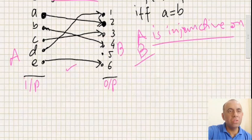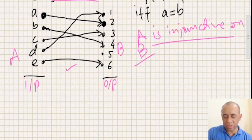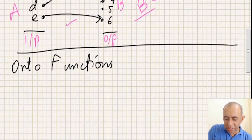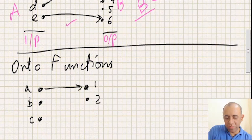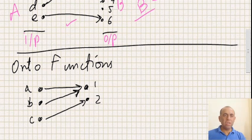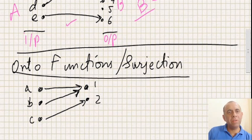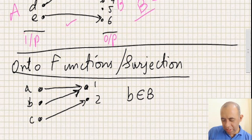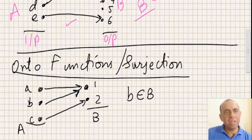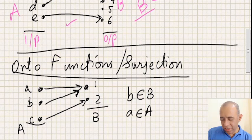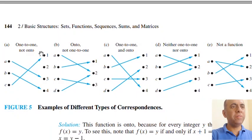There is another type called onto functions. For example, with domain {A, B, C} and codomain {1, 2}, multiple inputs can map to the same output. An onto function, also called a surjection, is defined such that for every element b that belongs to set B, there exists an element a in set A with f(a) = b. Every element in the codomain must be covered.